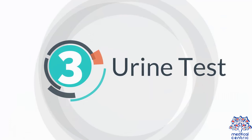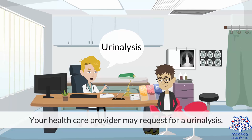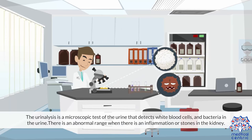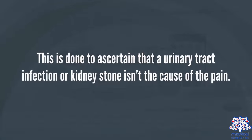Urine test. Your healthcare provider may request a urinalysis, which is a microscopic test of the urine that detects white blood cells and bacteria. There is an abnormal range when there is inflammation or stones in the kidney. This is done to ascertain that a urinary tract infection or kidney stone is not the cause of the pain.